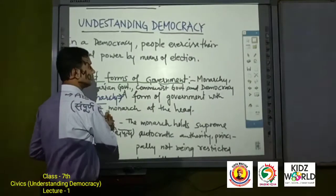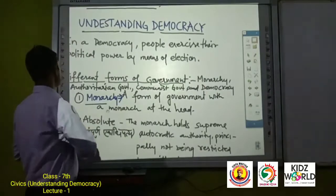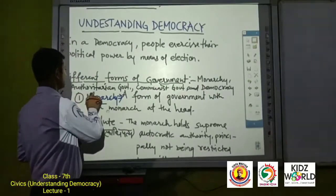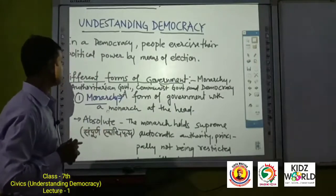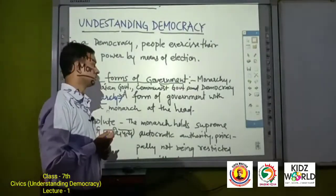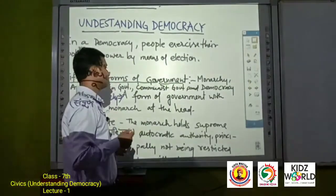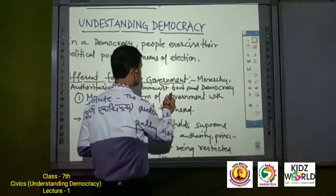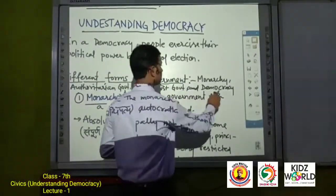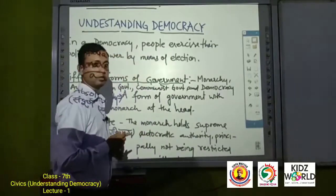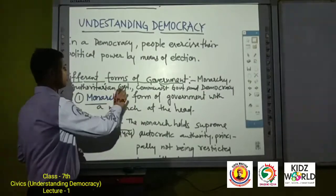The first is Monarchy. The second is Authoritarian Government — Authoritarian Government means Satya Dhaari Sarkar. Next is Communist Government, meaning Samiawadi Sarkar. And Democracy, which people can also refer to. So these are the different forms of government.